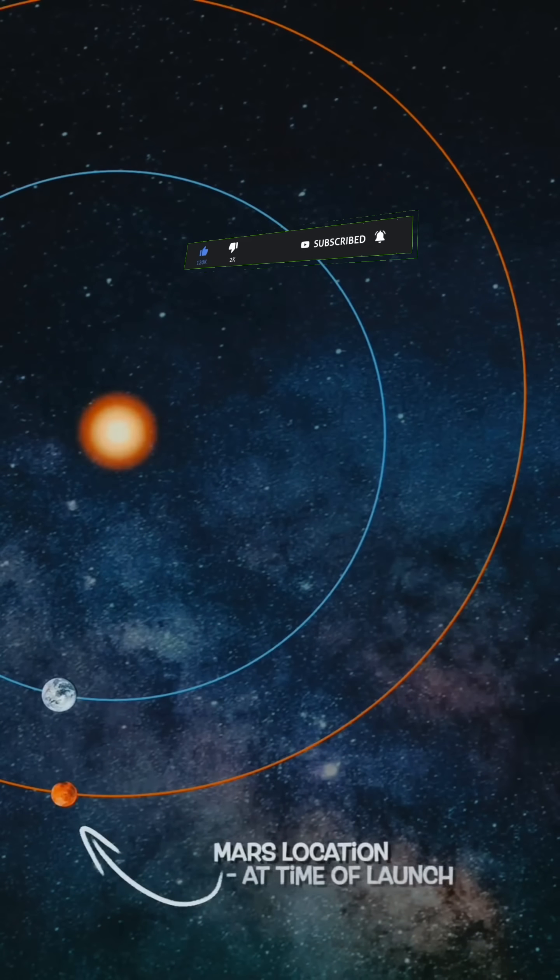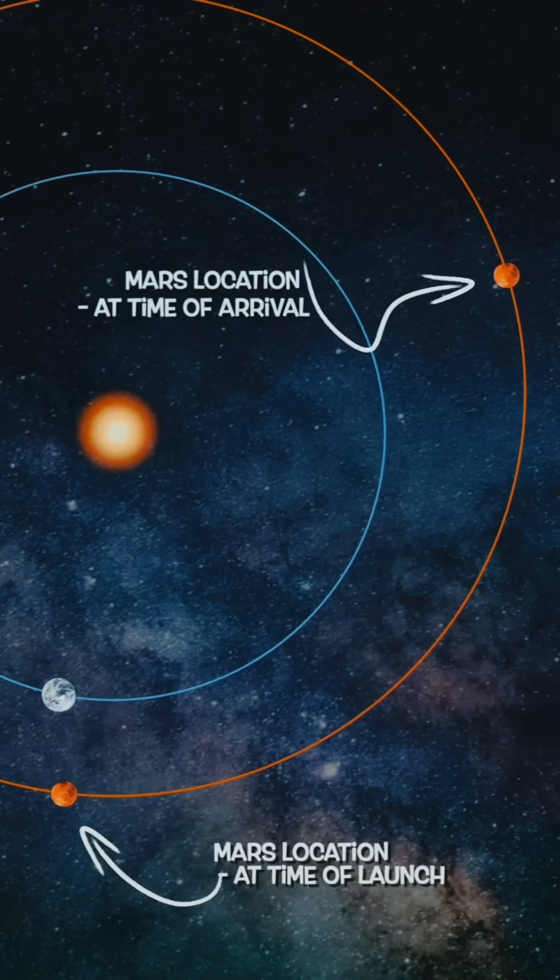This is why a spacecraft should travel not to where Mars is at the moment of launch, but to where it's going to be at the moment of arrival.